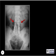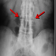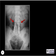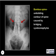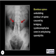What sign is being demonstrated here? This is the bamboo spine, which is the undulating contour of the spine caused by bridging syndesmophytes, usually seen in ankylosing spondylitis.